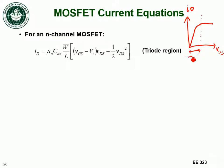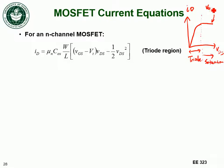This section is the triode region. The section where my drain current doesn't increase as a function of VDS is saturation. This curve corresponds to some gate-to-source voltage VGS that is greater than the threshold voltage VT.